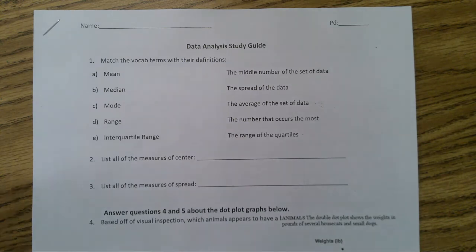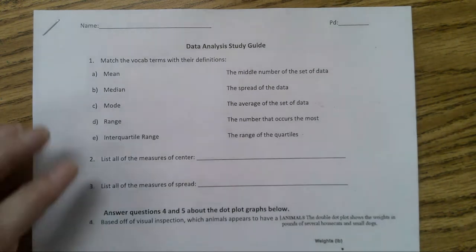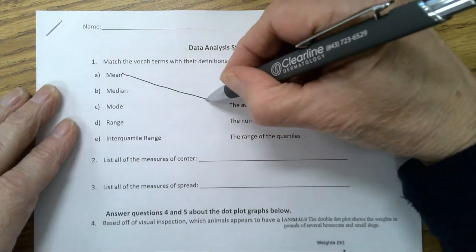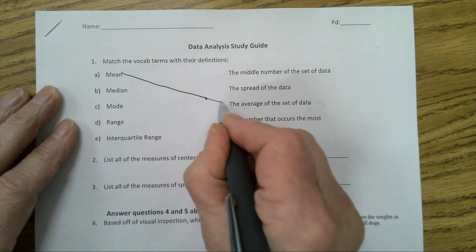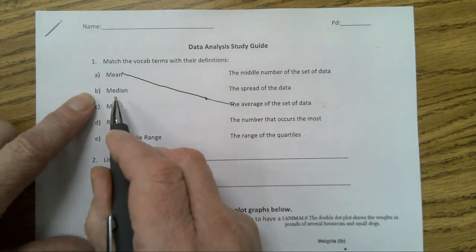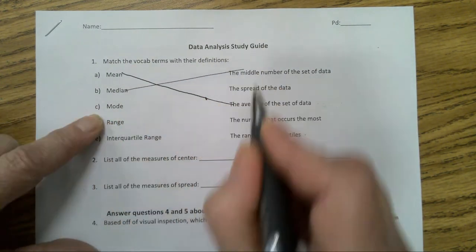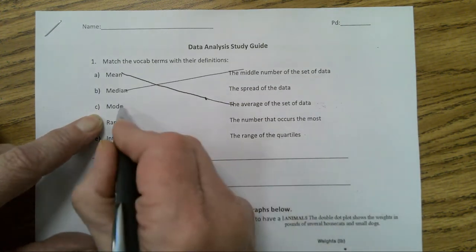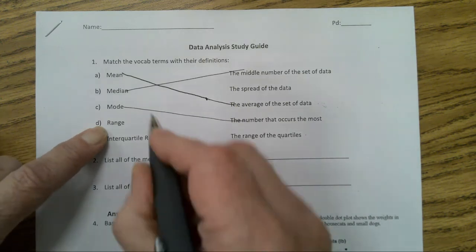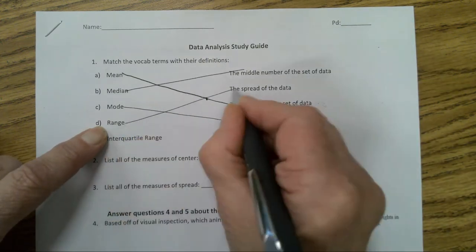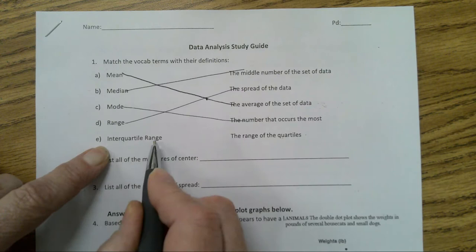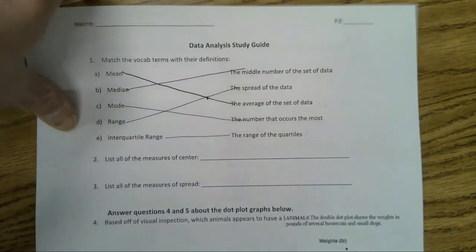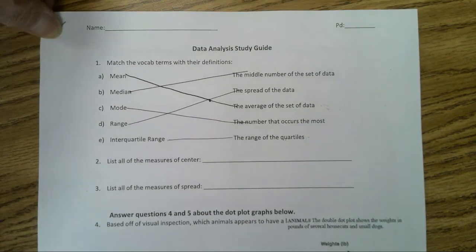So for letter A, mean is the average set of the data. Median is the middle number. Mode is the number that occurs the most. Range is the spread of the data. And the interquartile range is the range of the quartiles. It's how large the box is in a box and whiskers plot or a box plot.